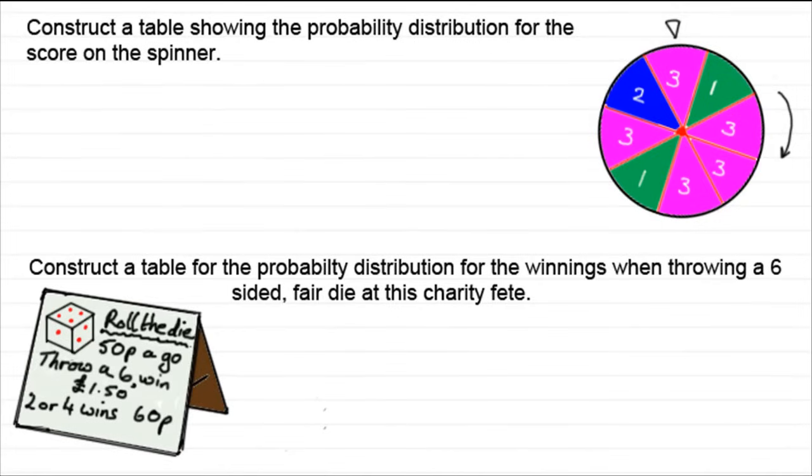Hi, welcome to this tutorial on discrete random variables where I'm going to show you how we form a probability distribution table for these two questions here and I'm also going to do another one when we finish these two. Now what do we mean by a discrete random variable first of all? Well it's something that you can measure exactly.